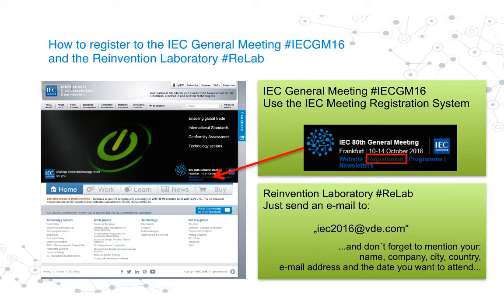Every event starts with the registration. Thomas, can you tell us how this is organized during the General Meeting? This time it is a little bit special because we have two events running. We have the regular IEC General Meeting, which is the 80th, by the way, and the first time in Frankfurt. The registration is done via the IEC registration system, which you can find on the IEC website.